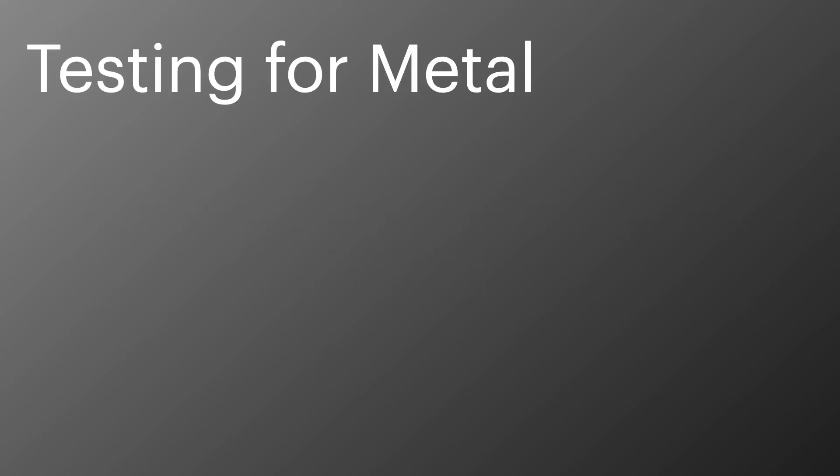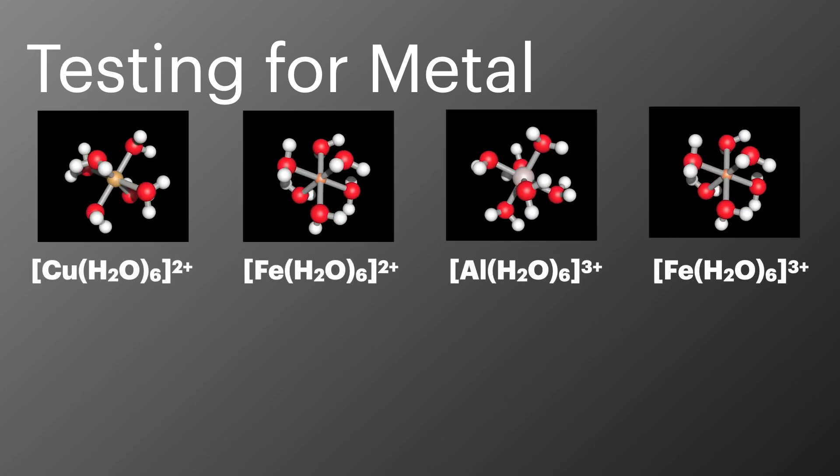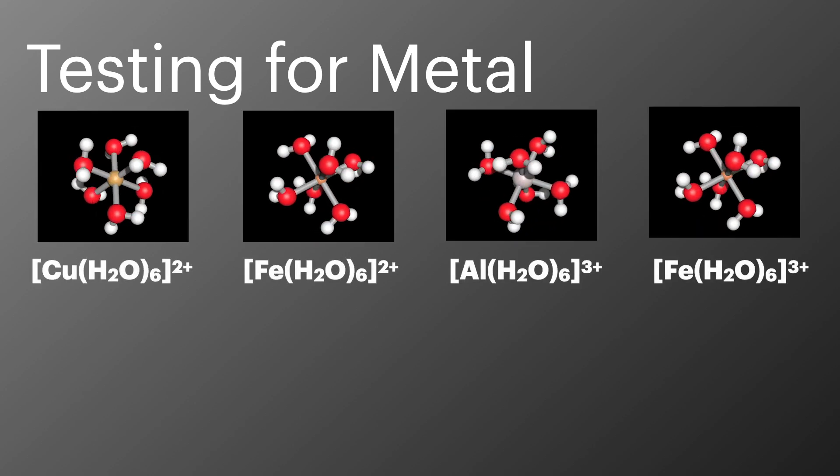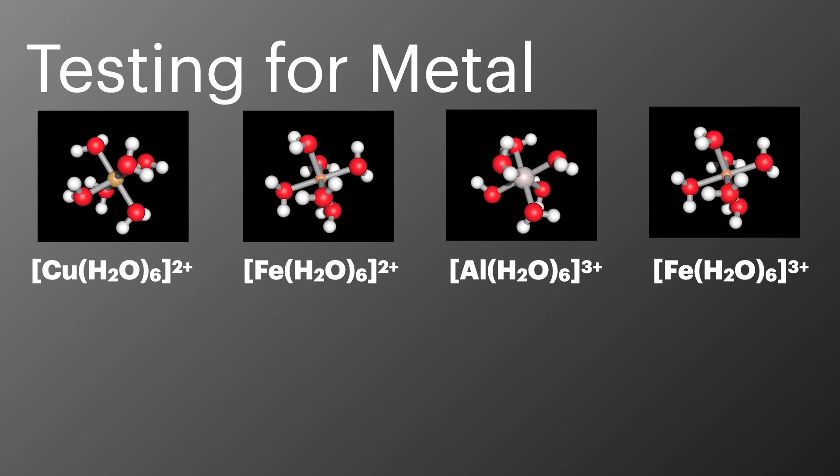So let's start with a quick recap of what we talked about in the previous episode. We're focusing our attention in this topic onto four metal aqua ion complexes: copper 2 plus, iron 2 plus, aluminium 3 plus and iron 3 plus.